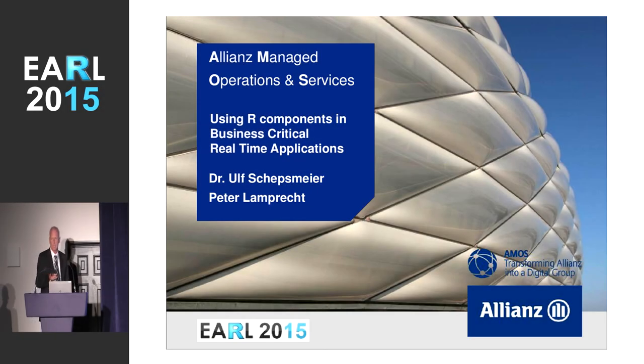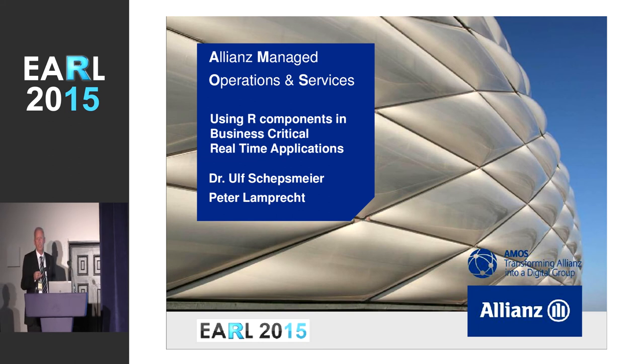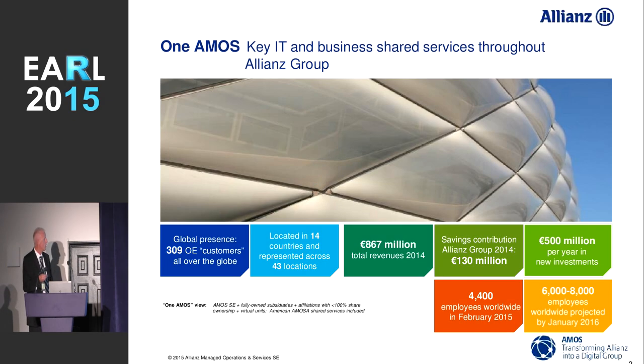I would like to introduce ourselves. Next to me is my colleague Ulf — he is a mathematics and statistics expert and member of our R team. I'm head of data warehousing, business intelligence, customer intelligence, and statistics using R. We are from a company named Allianz Managed Operations and Services. Amos provides IT services all around the world for all our group members, located in 14 countries with 43 locations.